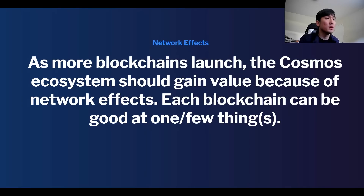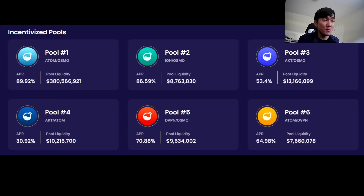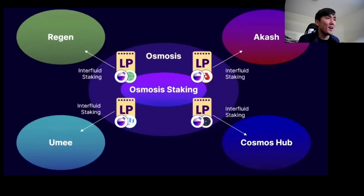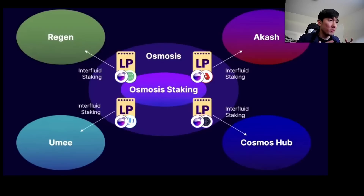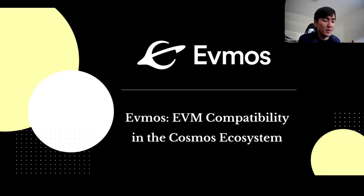Each blockchain can be good at one or a few things without having to do everything at once. Osmosis has pretty decent APYs and is good at facilitating swaps. They're also innovating with interfluid staking — conceptually, when you provide liquidity for, say, Avalanche USDC on the C chain you can't stake your AVAX to help decentralize the network. But on Osmosis, you can stake your LP tokens — for example Osmosis-Akash LP tokens — to secure the network, while also earning staking rewards on the Akash network side. It's pretty interesting.